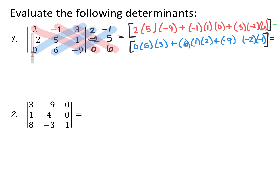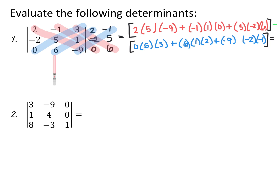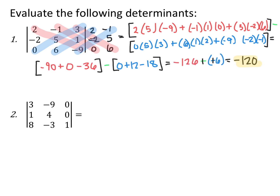Starting in the upper left-hand corner, multiply down the first diagonal: 2 times 5 times negative 9. Add the next down diagonal: negative 1 times 1 times 0. Then add the third down diagonal: 3 times negative 2 times 6. That's the down portion. Then subtract, starting in the bottom left-hand corner, multiplying up: 0 times 5 times 3, add 6 times 1 times 2, then add negative 9 times negative 2 times negative 1. It's still down minus up — there are just three downs and three ups. Multiplying and adding everything together, we get negative 126 for the down diagonals minus negative 6 for the up diagonals, giving negative 120.